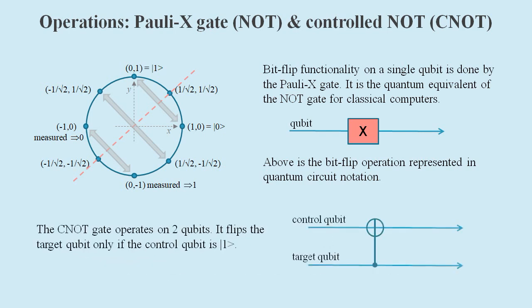The controlled-NOT gate does the same operation but only if another qubit called the control qubit is at a state of one.